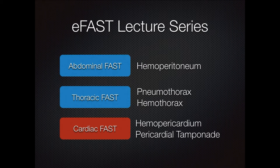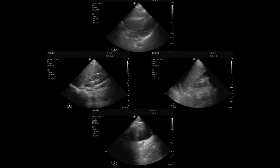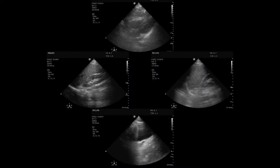Next week, if all things work out as anticipated, we're going to talk about the thoracic FAST — how ultrasound can affect our evaluation of the thorax, the lungs, and the pleural space. But today we're really going to focus on the cardiac component: hemopericardium, pericardial tamponade, and how patients who are traumatized can be helped with ultrasound specifically to evaluate the heart.